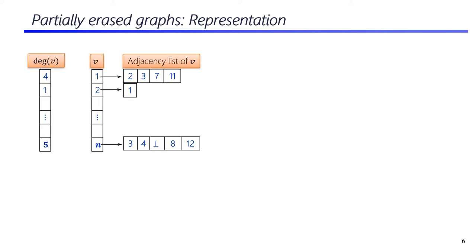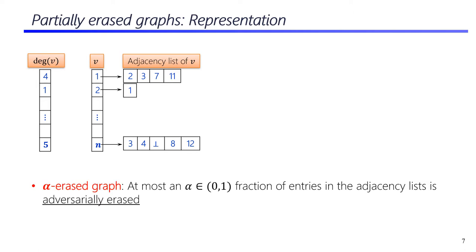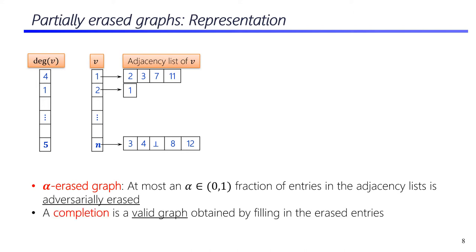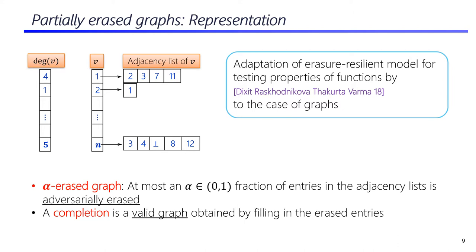We consider representations of such incomplete or partially erased graphs as adjacency lists with some missing entries, denoted by a special symbol as you can see here. Specifically, for a fraction alpha less than 1, a graph is alpha-erased if at most an alpha fraction of entries in the adjacency lists is adversarially erased. A completion of such a partially erased graph is a valid graph obtained by filling in the erased entries.